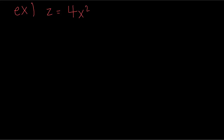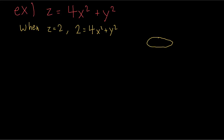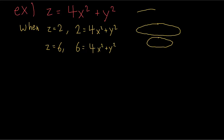Our next example is z equals 4x squared plus y squared. First, let's find the cross-sections perpendicular to the z-axis. If we fix z at a constant value, we know these are horizontal planes perpendicular to the z-axis. We want to find what the graph looks like at the intersection with those planes. When z equals 2, the cross-section looks like an ellipse. If you keep taking cross-sections at larger values of z, all you're going to get is bigger ellipses. All of the cross-sections of this graph perpendicular to the z-axis are going to be ellipses.